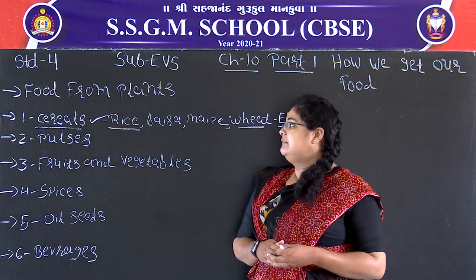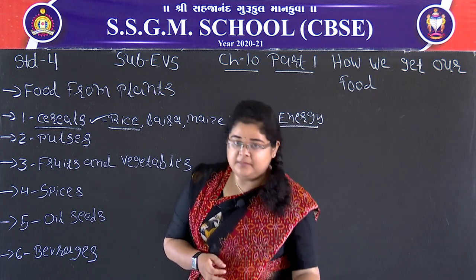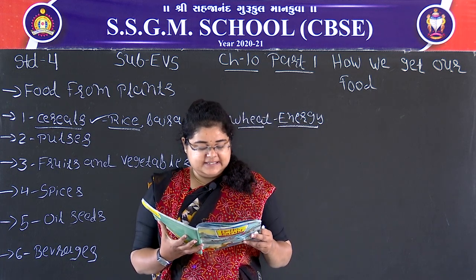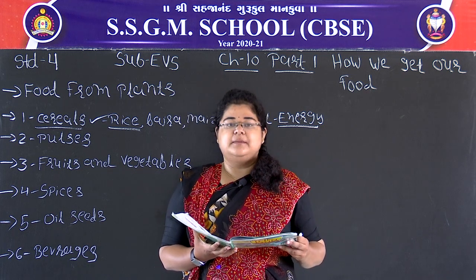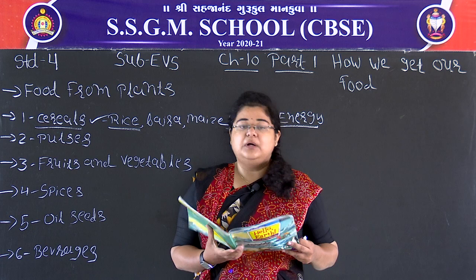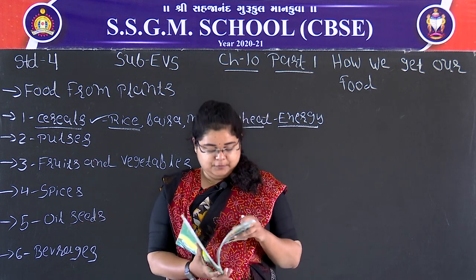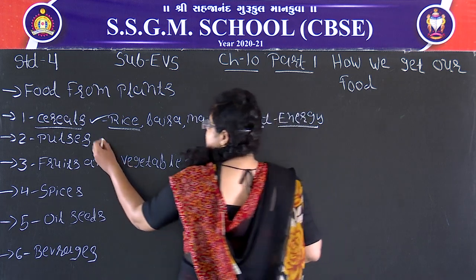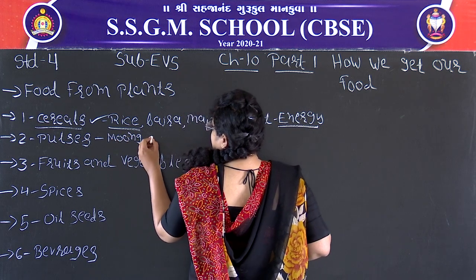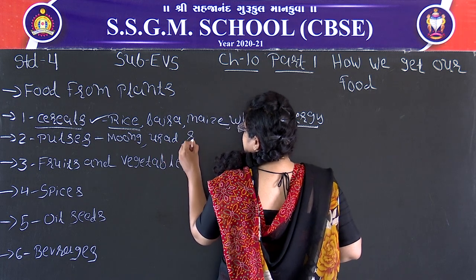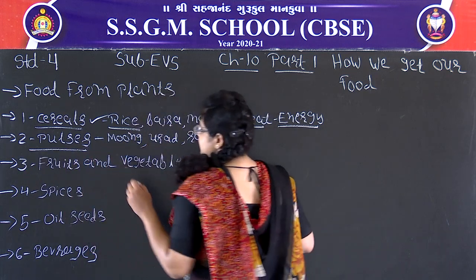After cereals, let's move to our second food item: pulses. Pulses are dried seeds of plants and include dals like moong, urad, and masoor, as well as kidney beans — राजमा. You must have heard of rajma chawal, which is a very famous dish. Rajma is included in the pulses category — ये सारी खाने की चीजें pulses में आती हैं.